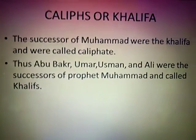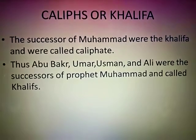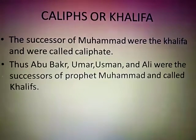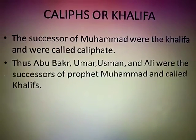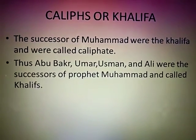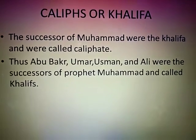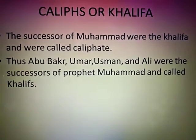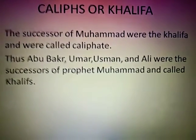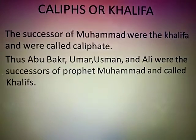The successors of Muhammad were known as the Khalifas and were called Caliphates. There were basically four important successors in the beginning. They were Abu Bakr, Umar, Usman, and Ali.